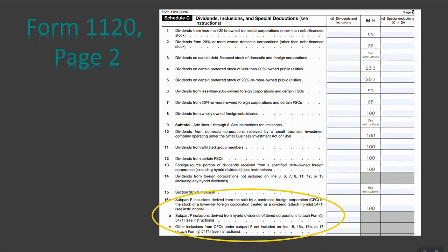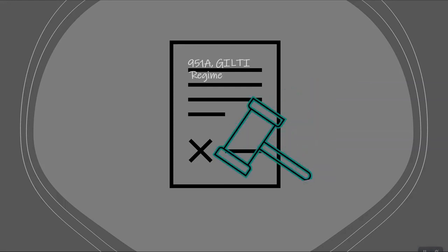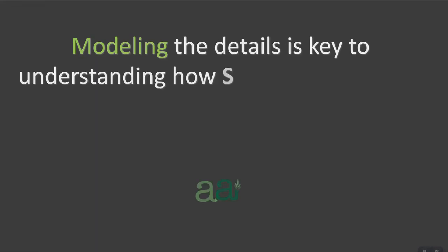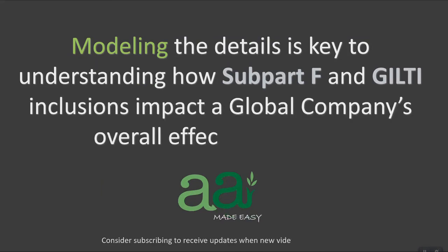Subpart F income in the past was a provision many companies navigated around, ensuring their income streams did not fall into a category of foreign-based company income and keeping tracking and computations minimal. In December of 2017, Congress added a new provision — the Section 951A GILTI regime. With this newer provision, companies can no longer work to avoid calculating subpart F, and in some instances may find it more beneficial than detrimental to their overall tax posture. Understanding how structural changes can impact revenue flows, how exceptions may be applied, and how rules like the de minimis and full inclusion rules impact a subpart F inclusion will help tax departments model out and utilize subpart F as a tax strategy going forward.